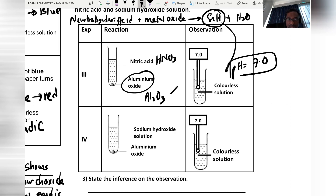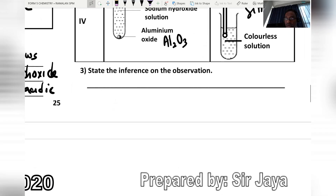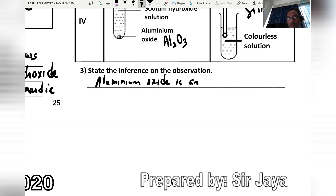In experiment four, sodium hydroxide reacted with aluminium oxide also gives a pH value of 7, meaning a salt solution is formed. The inference for this observation is that aluminium oxide is an amphoteric oxide.